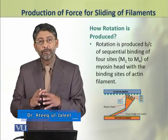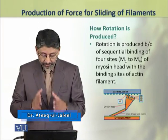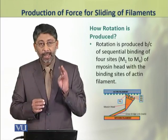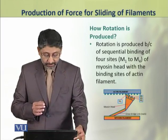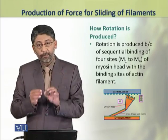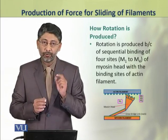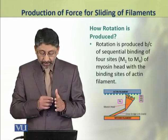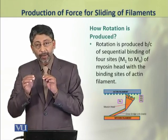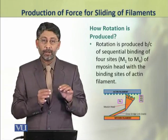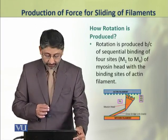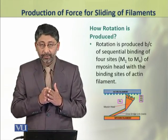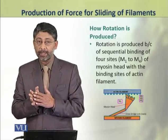The rotation of the myosin head is produced because the myosin head has four binding sites: M1, M2, M3, and M4. These sites sequentially bind with the binding sites present on the actin filament. So, the myosin head has four binding sites and the actin filament also has four binding sites.